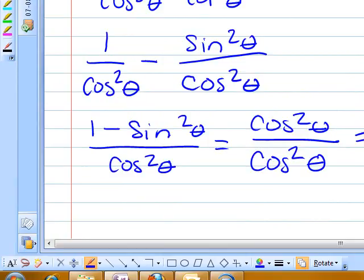You see that 1 minus sine squared theta would be the same as cosine squared theta. So then you have cosine squared theta over cosine squared theta, which is equivalent to 1.